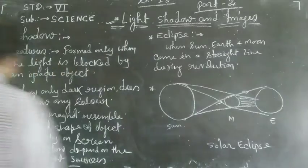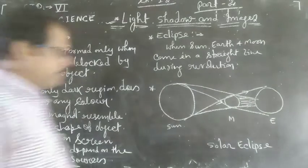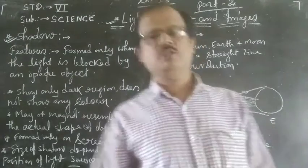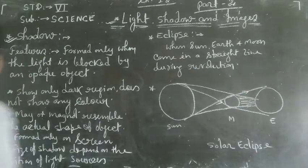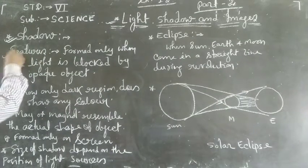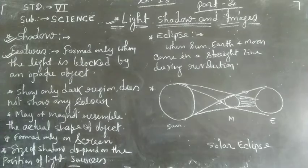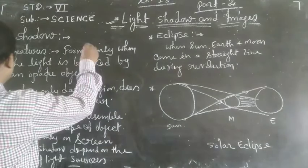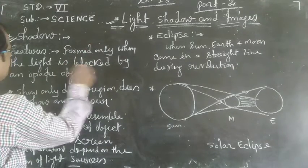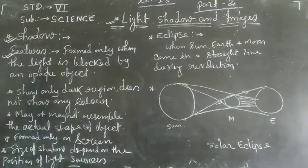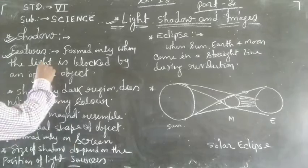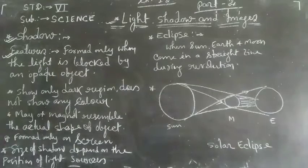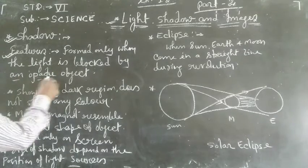For forming a shadow, a light source must be needed. Some features related to shadow: for forming a shadow, light is blocked by an opaque object.